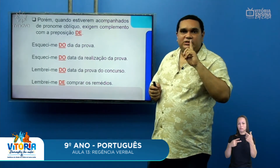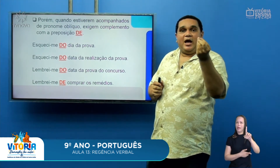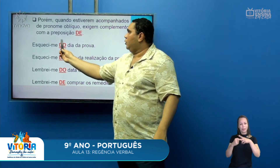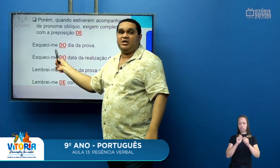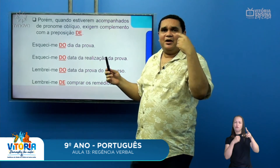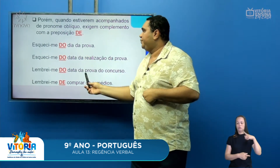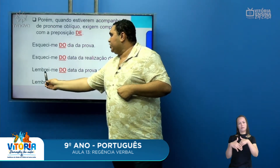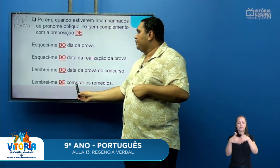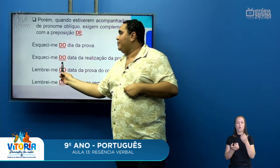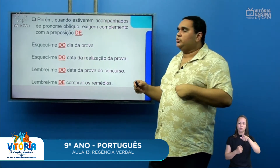Porém, há um caso em que podemos utilizar a preposição 'de' após esses verbos: quando o verbo esquecer ou lembrar vier acompanhado de pronome oblíquo. Por exemplo: 'Esqueci-me do dia da prova', 'Esqueci-me da data da realização da prova', 'Lembrei-me do dia da prova do concurso', 'Lembrei-me de comprar os remédios'. Percebam que nesses casos o verbo esquecer e o verbo lembrar aparecem acompanhados do pronome oblíquo 'me'. Nesse caso, podemos utilizar a preposição.